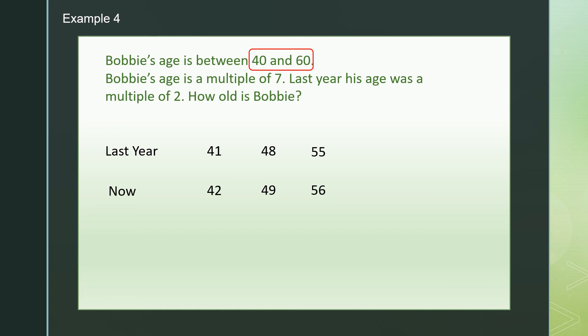Last year his age was a multiple of 2. So 41, 48, and 55, which one is a multiple of 2? It is 48. How old is Bobby? So how old is Bobby means how old is Bobby now? So now is 49. Bobby is 49 years old now.